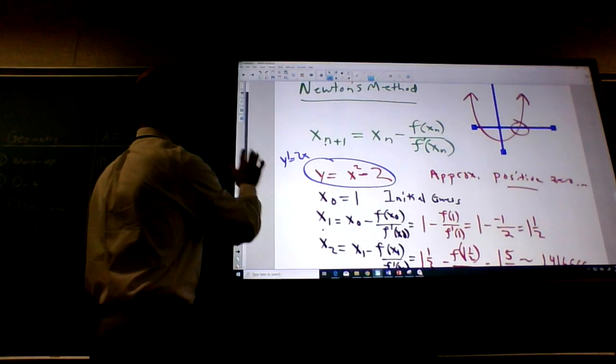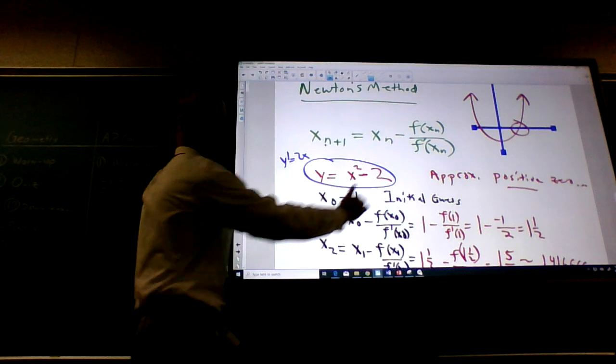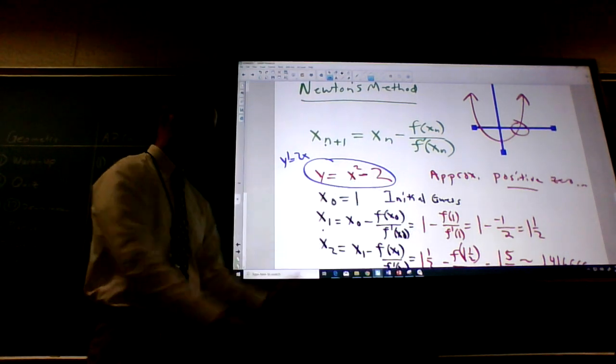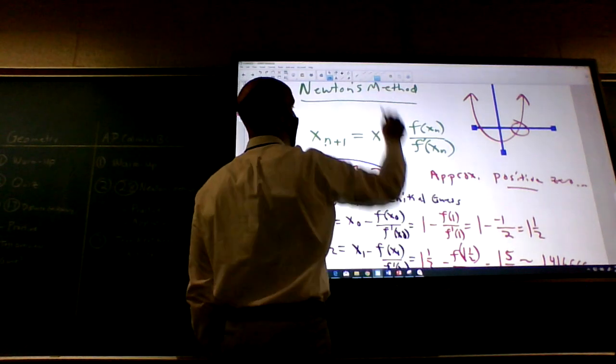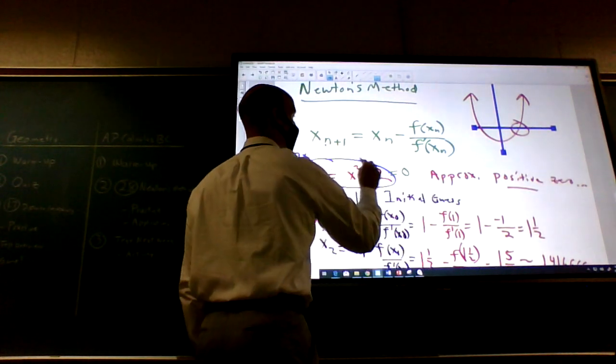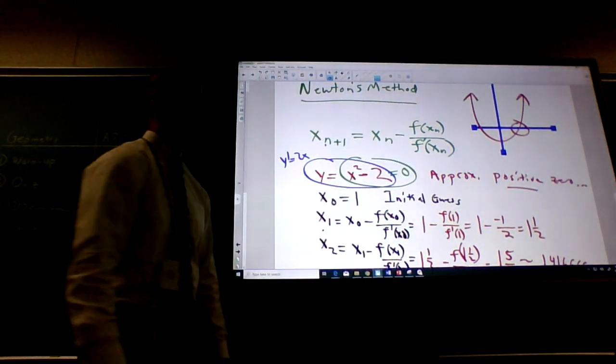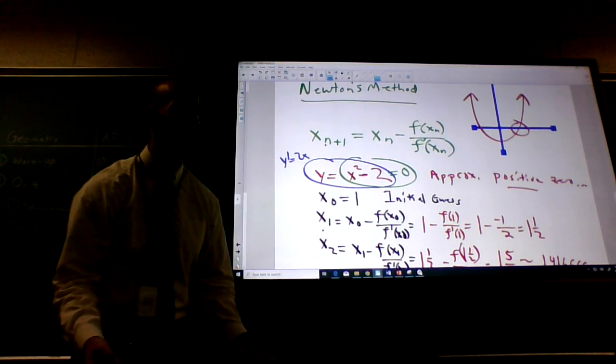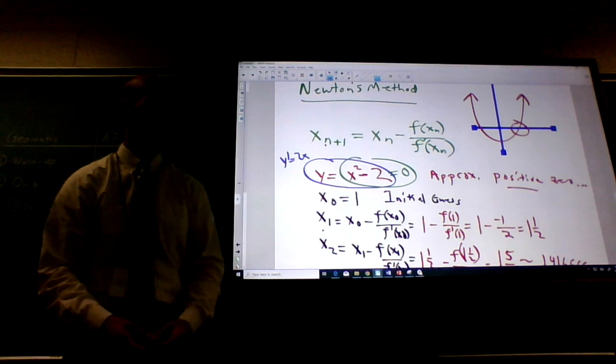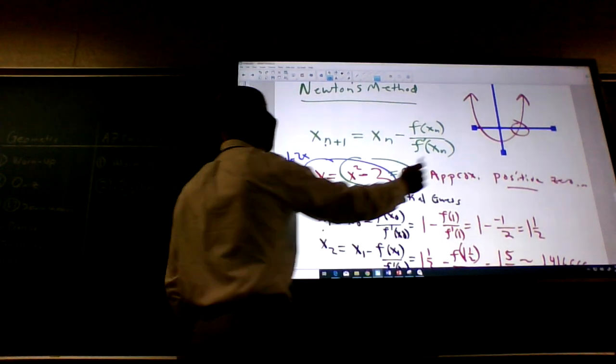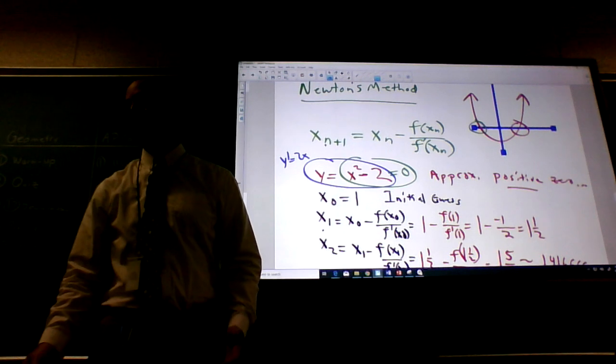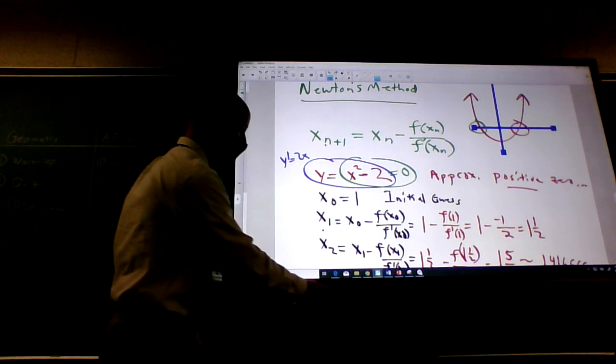And if you go back to the problem, it kind of should have made sense, right? The square of what number minus 2 is equal to 0? The square of what number minus 2 equals 0? The square root of 2. Duh. Right? Doesn't that make sense? Now, keep in mind, not only does the square root of 2 work, but also the negative square root of 2, okay? This is called Newton's method.